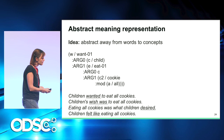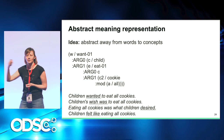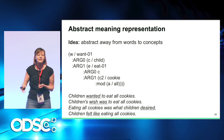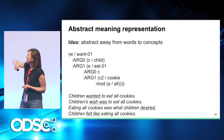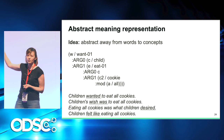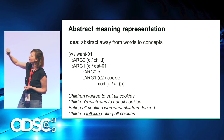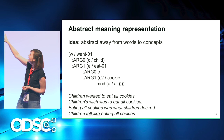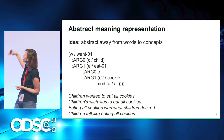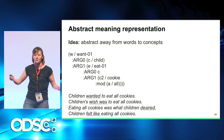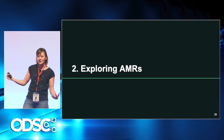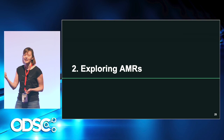Here you can see an abstract meaning representation for paraphrases of the same meaning: 'children wanted,' 'children's wish was,' 'what children desire,' 'children felt like,' and so on. All of them have the same meaning representation. In the AMR we can see an event of wanting, with argument zero being 'children' — we define a variable C that we reuse — argument one is the event of eating, argument zero of eating is again C (the child defined earlier), and then we have 'all cookies' as a quantified concept.